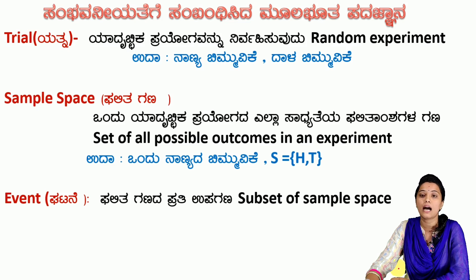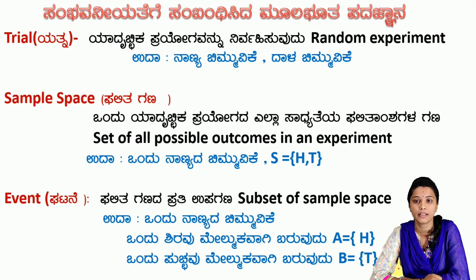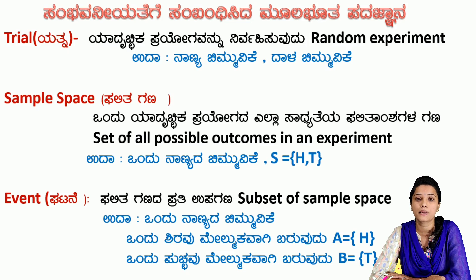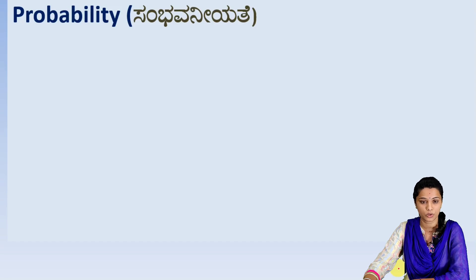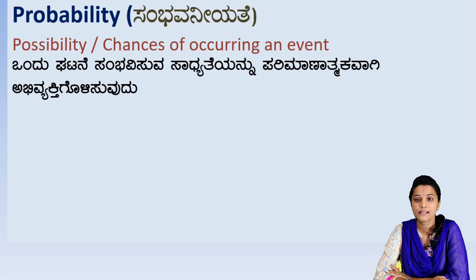An event is a subset of sample space. When we toss a coin, the outcome can be head or tail. Suppose head is one outcome, tail is another. So the head event is a subset of sample space. Sample space contains every possible element. Probability refers to the chances of occurring an event.